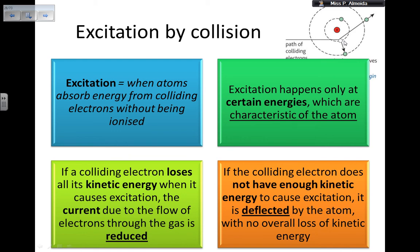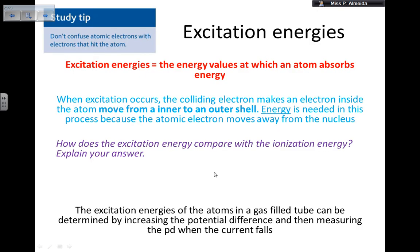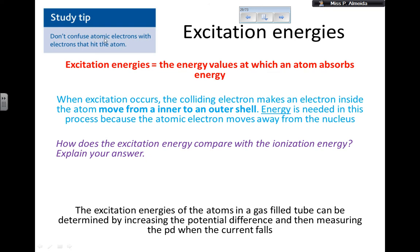There are two possible outcomes of a collision. If a colliding electron loses all its kinetic energy causing excitation, the current through the gas is reduced because fewer charges are moving. However, if the colliding electron does not have enough kinetic energy to cause excitation, it is deflected by the atom with no overall loss of kinetic energy. Study tip: do not confuse the colliding electrons with the atomic electrons inside the atom.